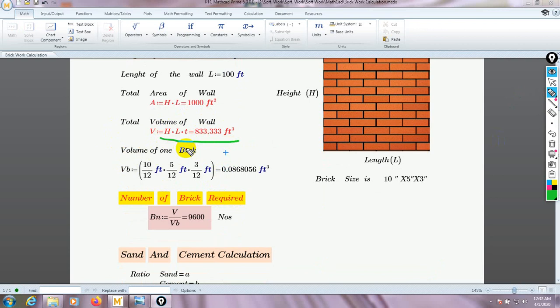After that, volume of one brick. We have to cover the total volume with our bricks. According to our country, the brick size with mortar is 10 inches by 5 inches by 3 inches—this is our standard brick size with mortar. If we find out its volume, it's 10/12 times 5/12 times 3/12, which equals 0.086805 cubic feet. This is the volume of one brick with mortar.